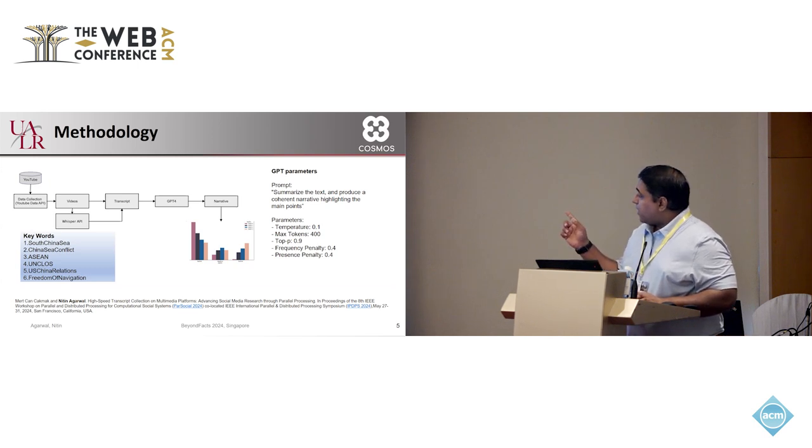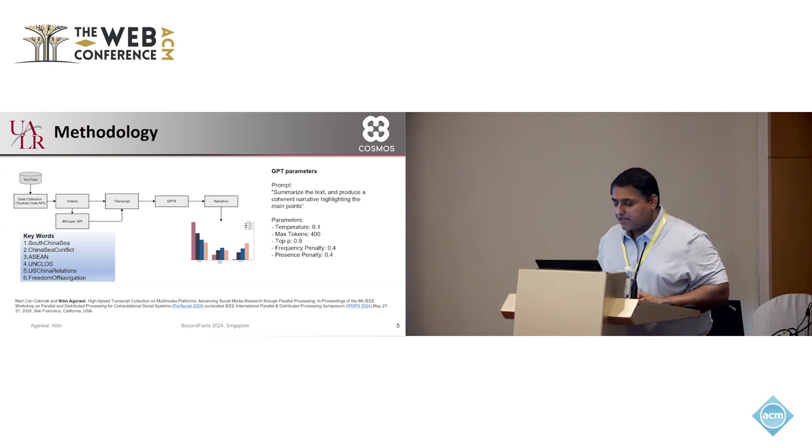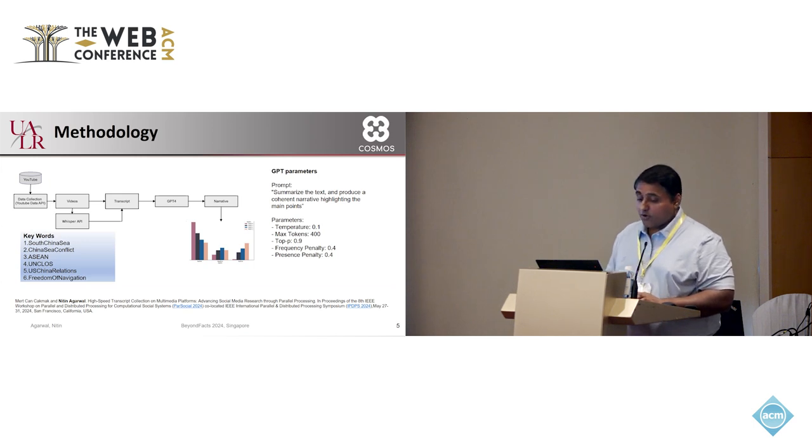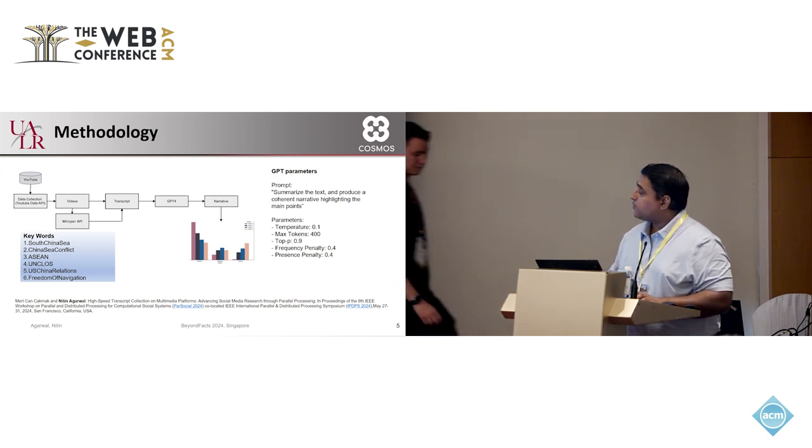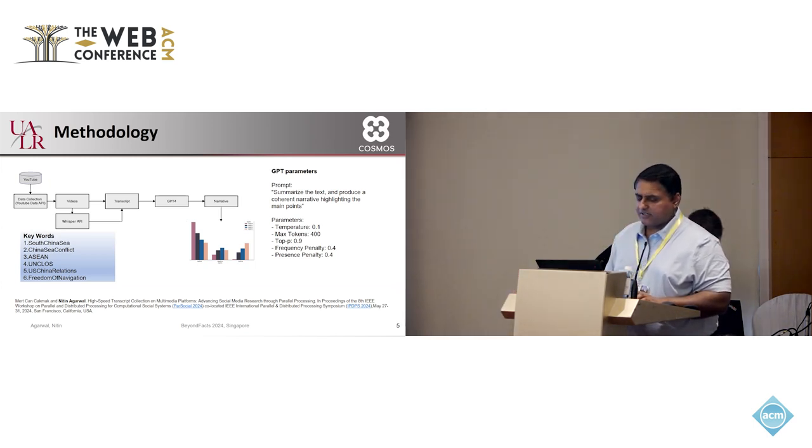In fact, our technique for generating these transcripts is recently published and is going to be presented at the end of this month at the IEEE workshop on parallel and distributed computing for computational social systems par social that is held along with parallel and distributed processing symposium. So once the transcripts are generated, we run those transcripts through GPT-4 to extract our abstractive summaries or narratives and then start analyzing them, looking at toxicity, sentiments, emotions, etc. Here, we have some of the GPT prompt that is used to extract these summaries as well as the parameters.